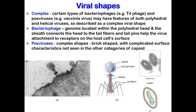Certain types of viruses have complex shapes. For example, certain types of bacteriophages and pox viruses may have features of both polyhedral and helical viruses, and so are described as complex in shape. Bacteriophages have their genome located within the polyhedral head, and the sheath connects the head to the tail fibers; tail pins help the virus attach to receptors on the host cell surface. Pox viruses are also complex in shape — brick-shaped with complicated surface characteristics. On the slide, A and B show bacteriophage and C shows pox viruses.